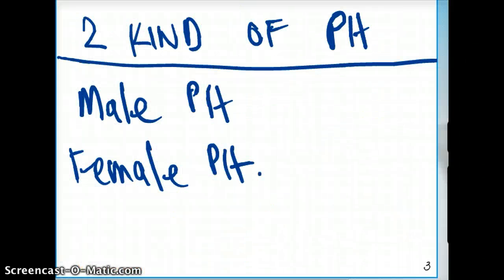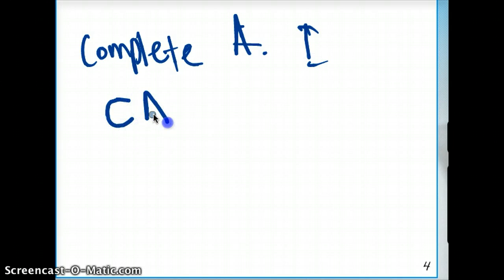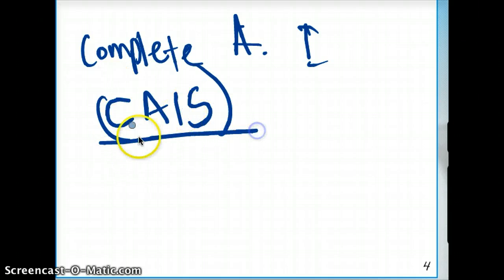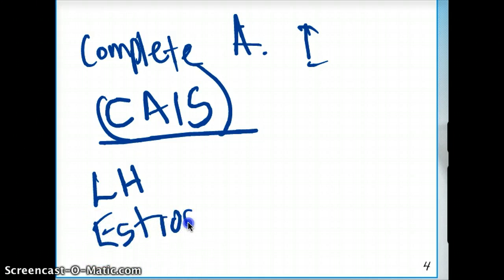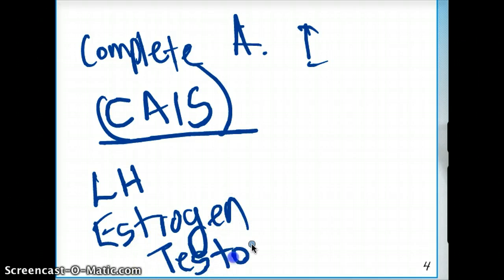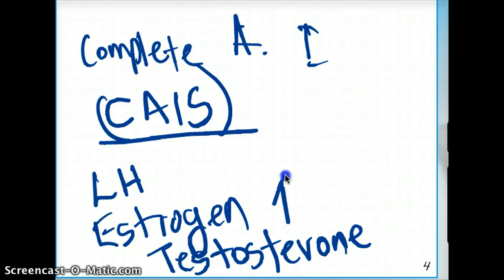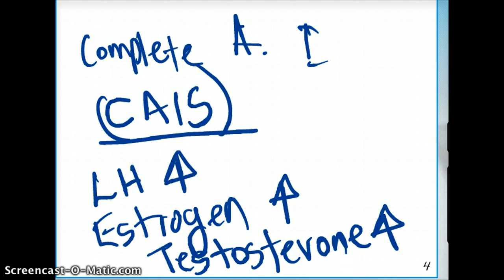Let's quickly talk about what are going to be the different levels of hormones in complete androgen insensitivity syndrome, also called CAIS. In CAIS, what's going to be the level of LH, what's going to be the level of estrogen, and what's going to be the level of testosterone? Interestingly, they're all going to be high. This is the only sex chromosome disorder where LH, estrogen, and testosterone are all going to be high. That is a big clue in terms of what CAIS is and how you can differentiate it from other disorders.